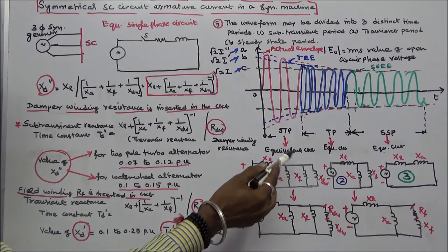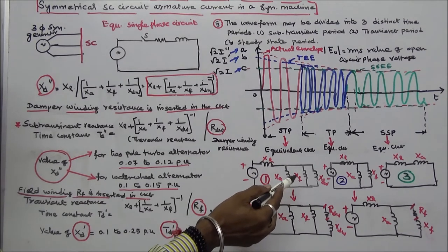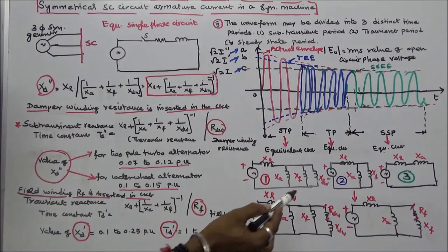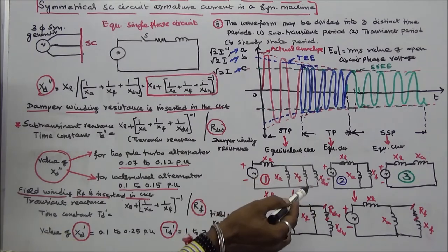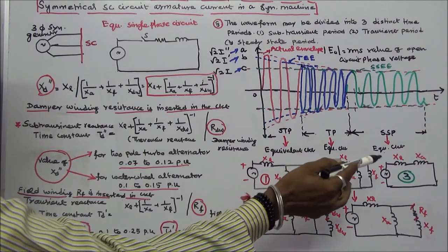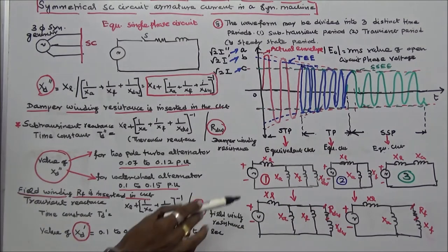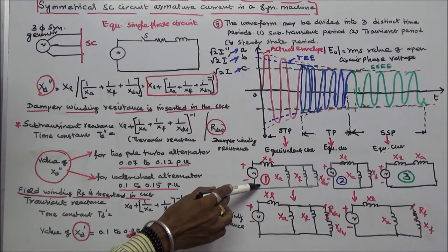In this class we discuss the equivalent circuit of subtransient reactance, transient reactance, and steady-state reactance. The first is the equivalent circuit of subtransient reactance.